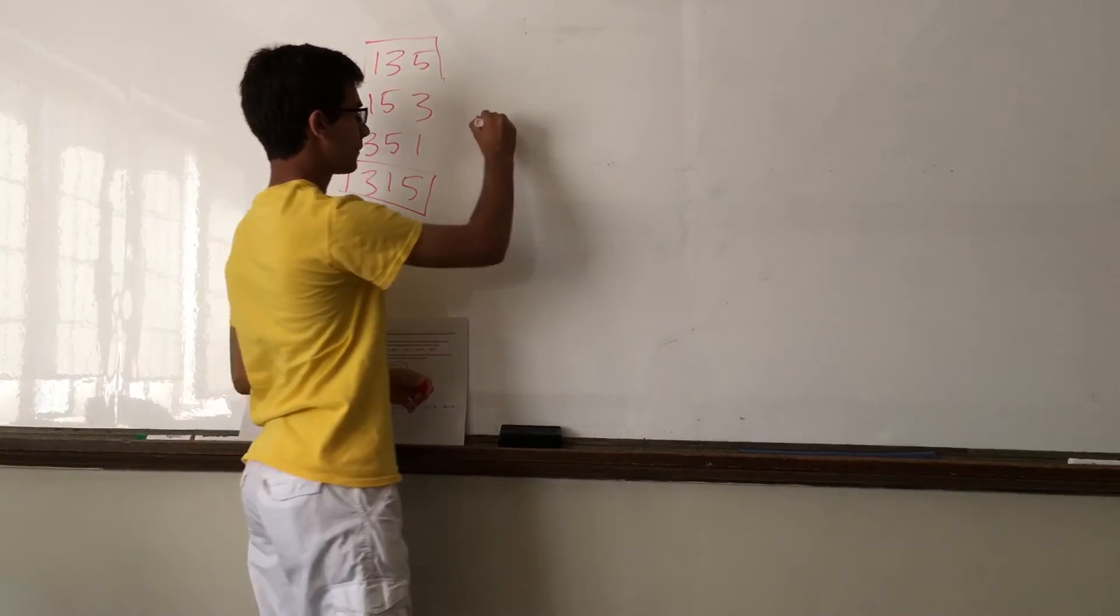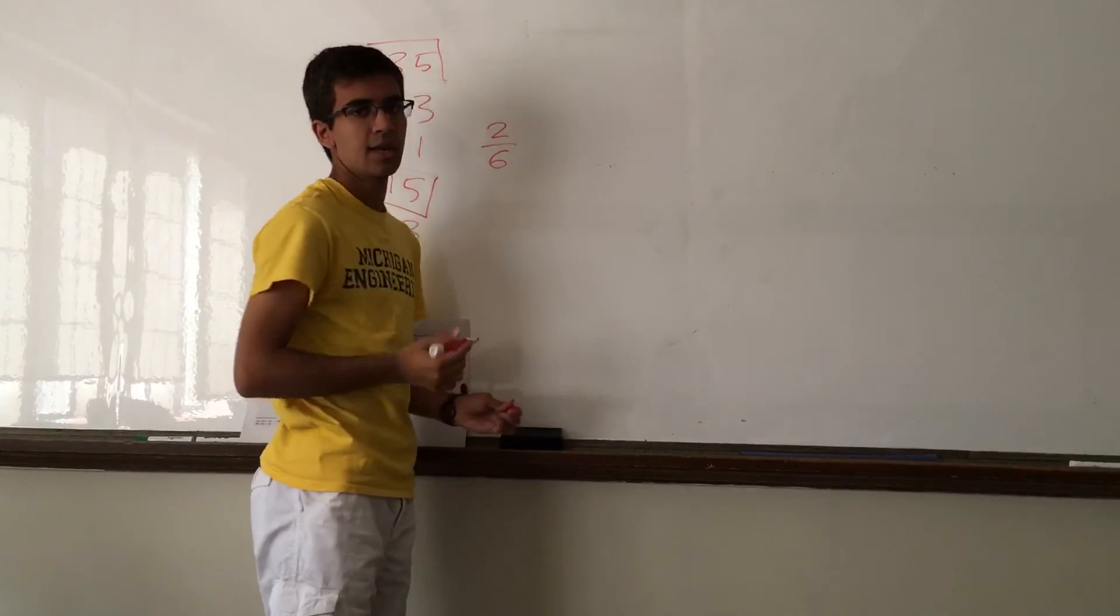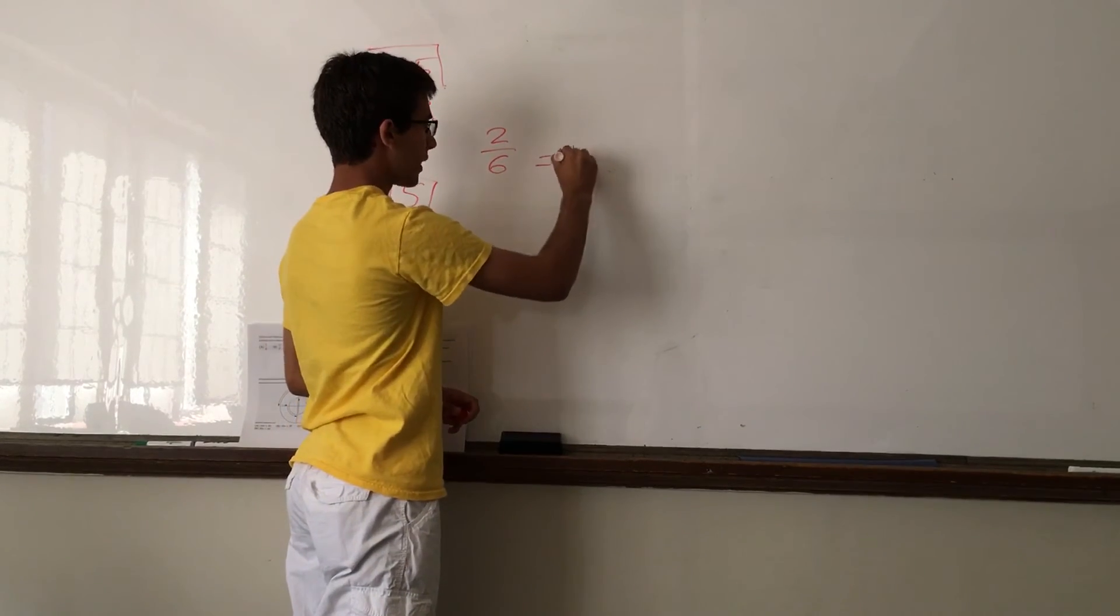So that's 2 out of the six possibilities, and if we reduce this fraction, we get one-third.